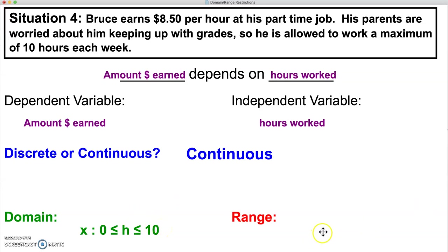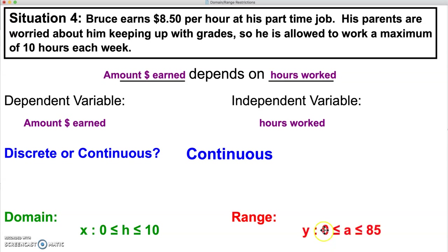Our range is going to depend on our domain. The amount of money earned depends on the amount of hours worked. From our starting value in our domain of 0, if he works 0 hours that week he's going to earn $0. If he works 10 hours that week, he's going to earn $85. So our range is going to look like 0 less than or equal to A, for amount of money earned, less than or equal to 85.